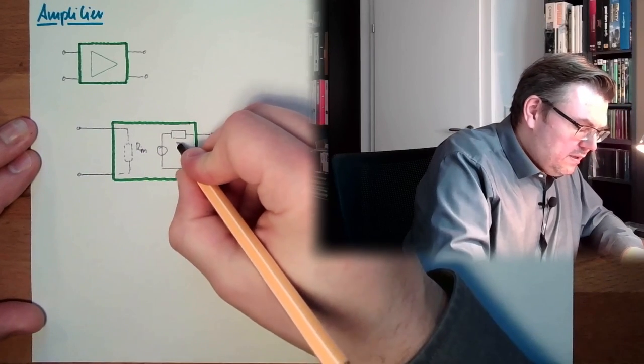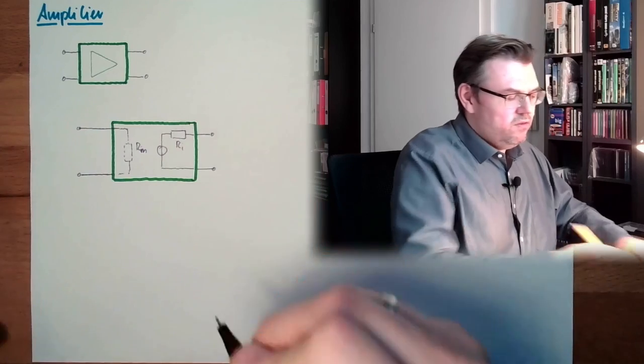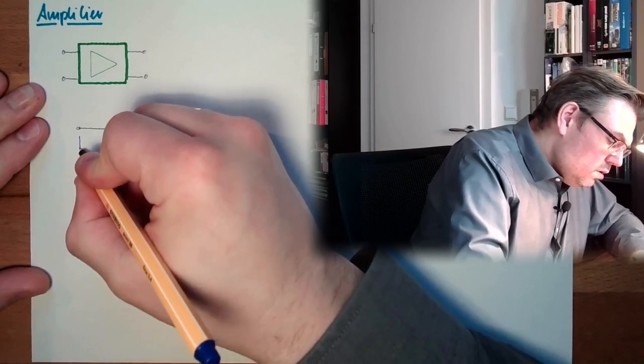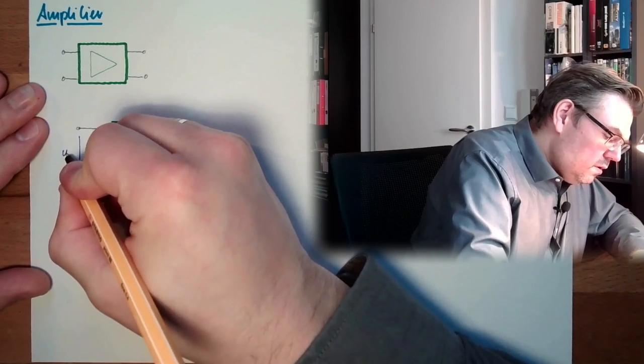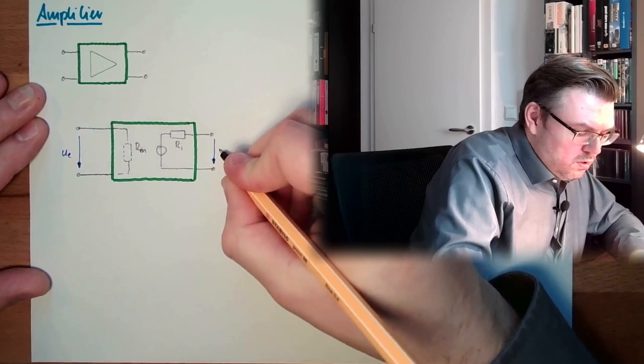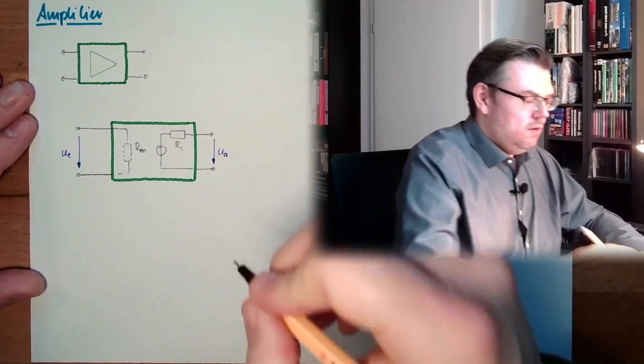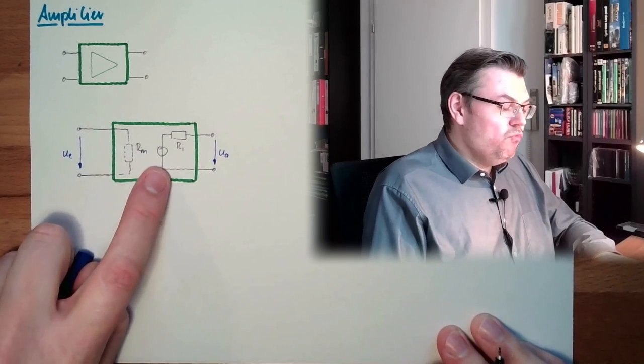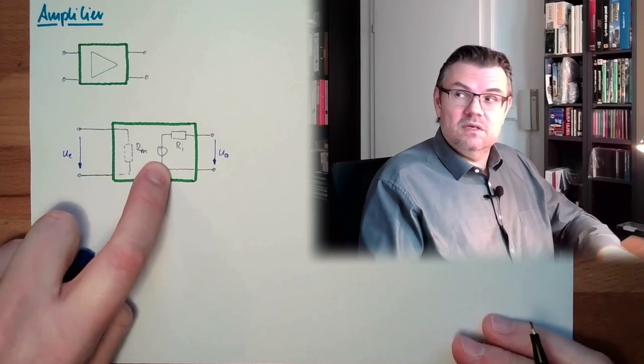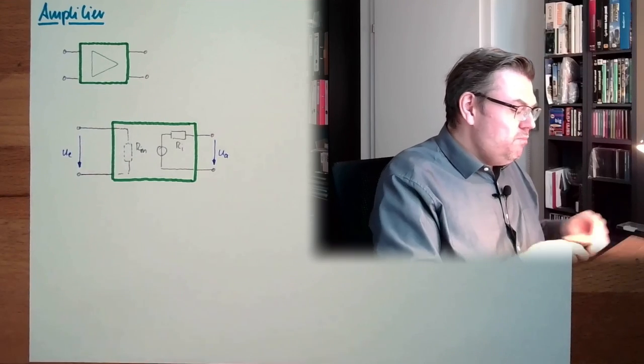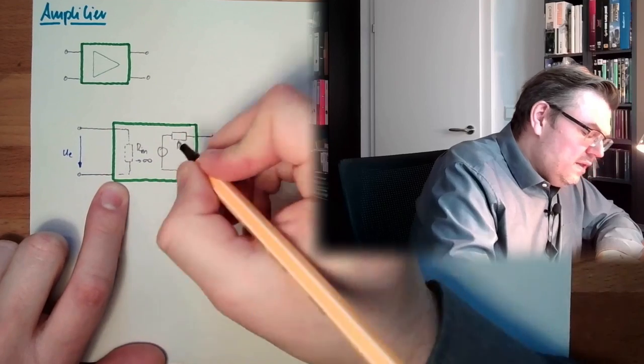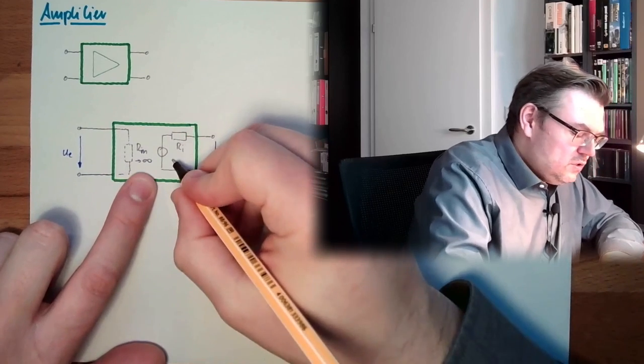Here Rm. And this I write RI for internal source. And this is the measurement resistance. And let's say my signal here is U. This is the input, Ue. And here is my output, Ua. So, the input is controlling the output voltage of this voltage source here. What must the input resistance be? Ideally, it must be unlimited. And this should be zero.